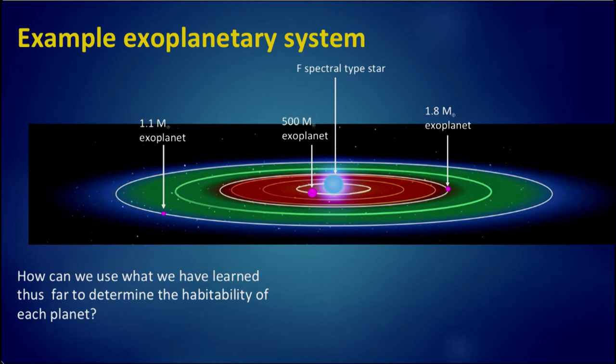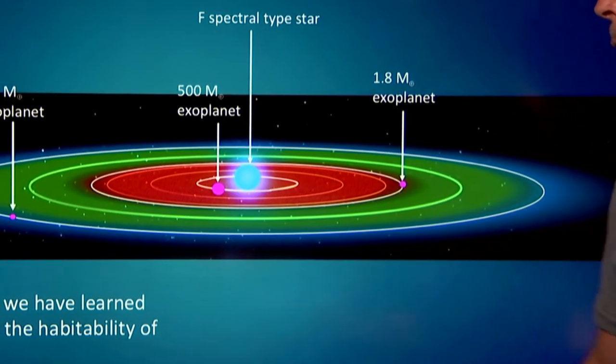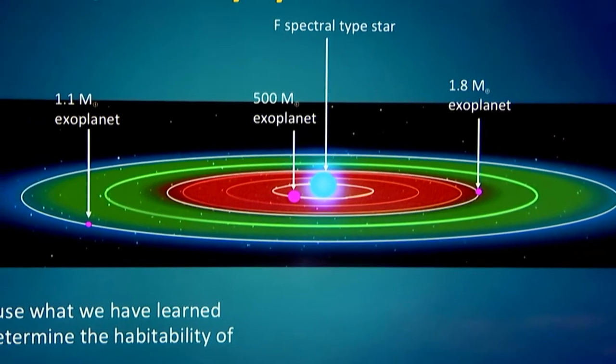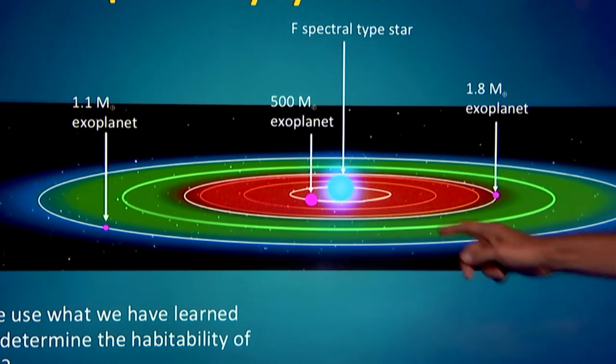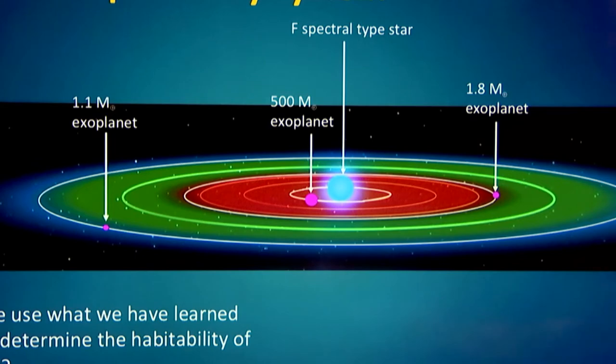Let's imagine a super-Earth on the inside edge of the habitable zone, a truly Earth-like planet at or beyond the outer edge of the habitable zone, and a hot Jupiter orbiting very close to the parent star. What are the things we can say about such planets?